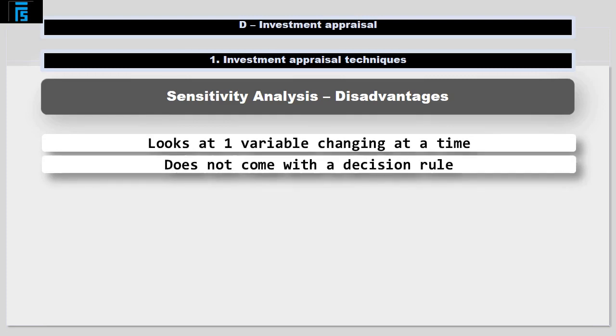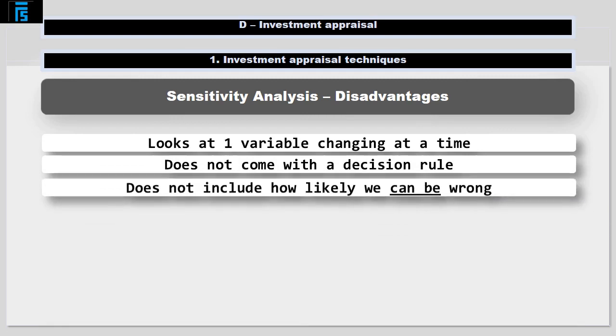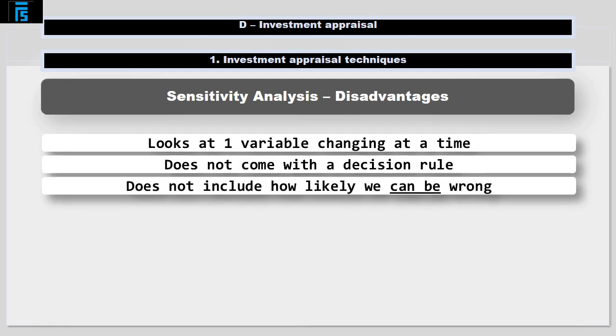It doesn't come with a decision rule. Does a sensitivity of 6% mean we don't go ahead? That's down to the judgement of the decision maker. There are no rules to help make the decision.